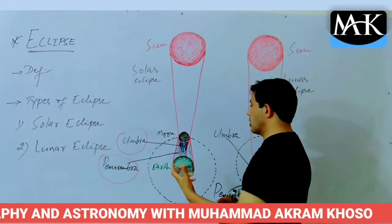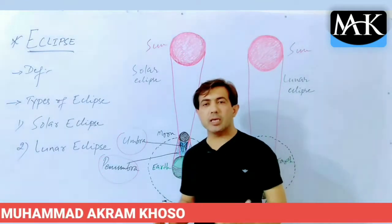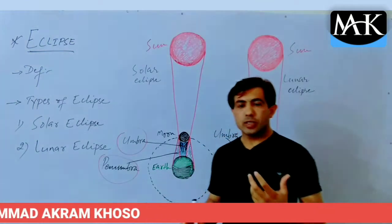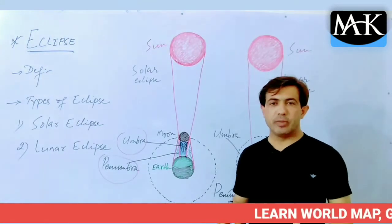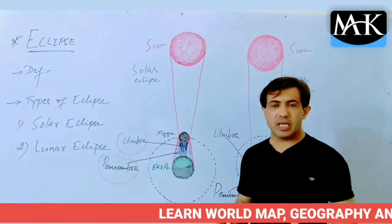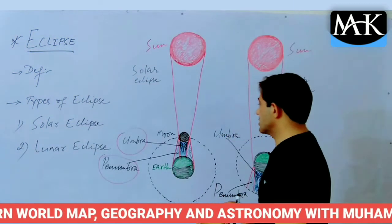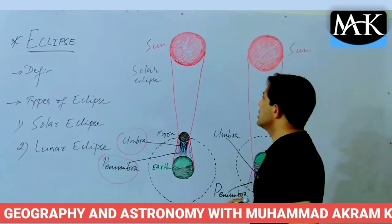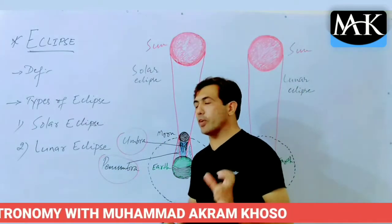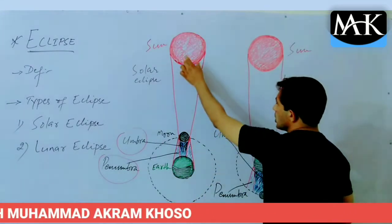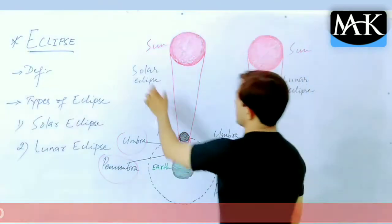Satellites like the moon and planets like the earth and other solar system planets are not self-luminous — they are not bright themselves. They sometimes look bright because they reflect the light of the sun. So the sun is a star and stars are self-luminous bodies.